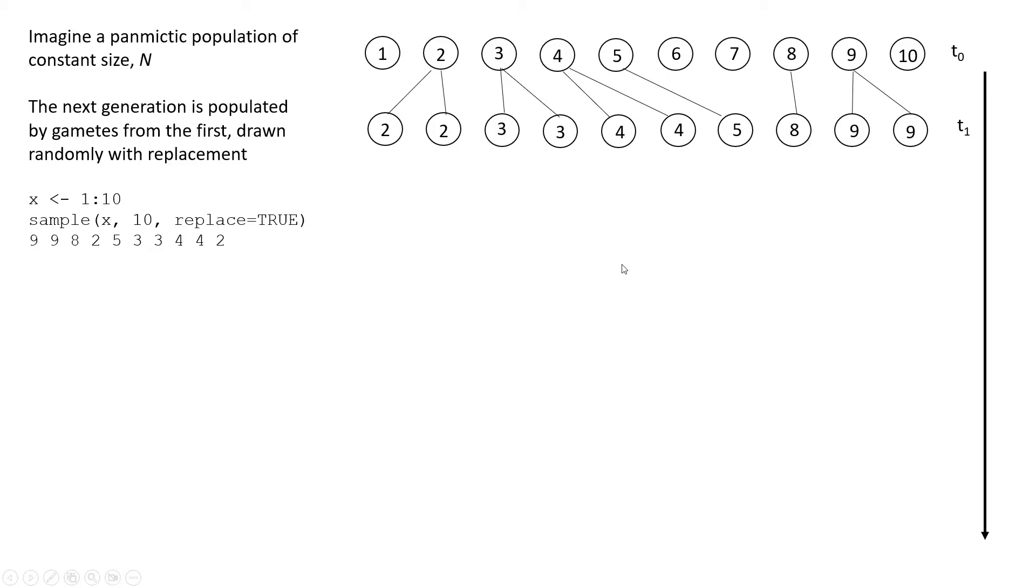So basically that allows us to populate the next generation with lineages drawn from the first, but with a chance that we don't draw a particular lineage and that we may draw a different lineage more than once. So that's effectively what we're doing here. And this is the basic way that the Wright-Fisher model works. For those of you familiar with that term, it's just a finite population with random draws of gametes that are going to populate the next generation.